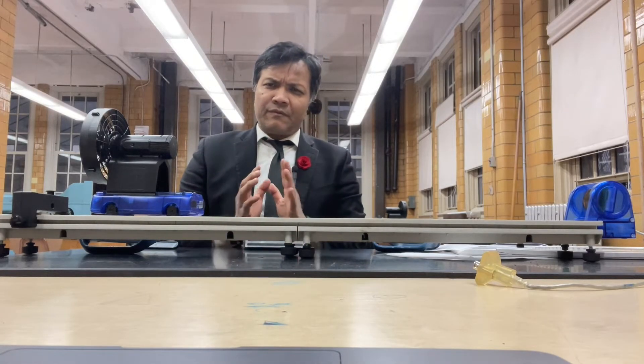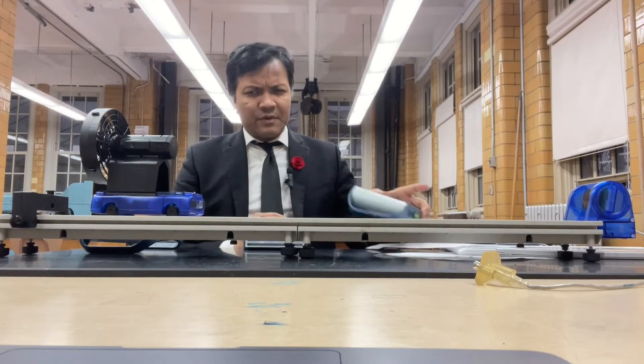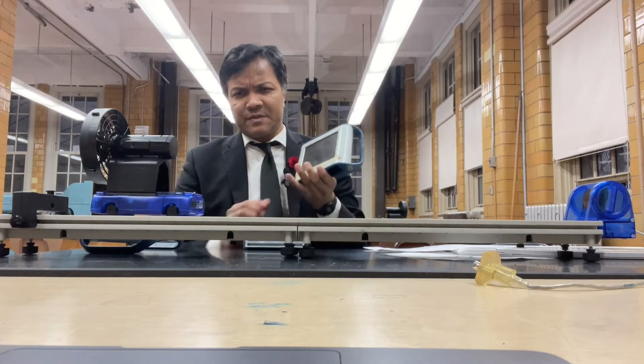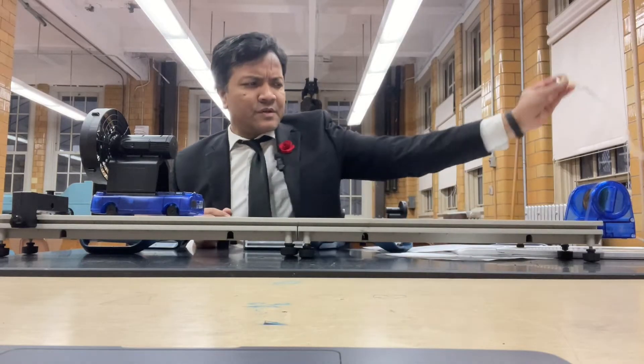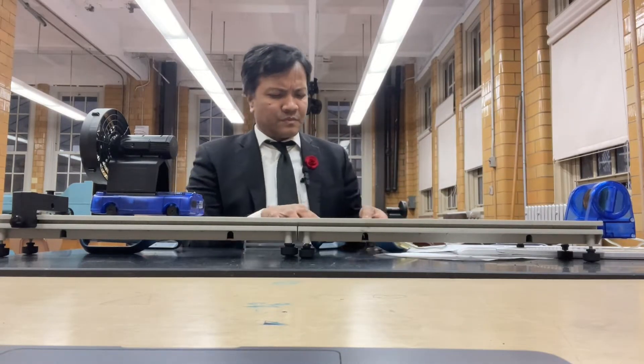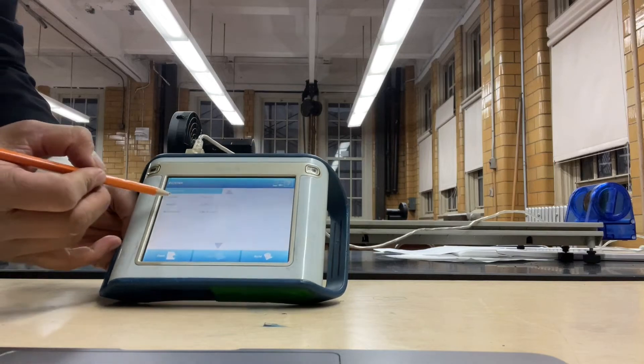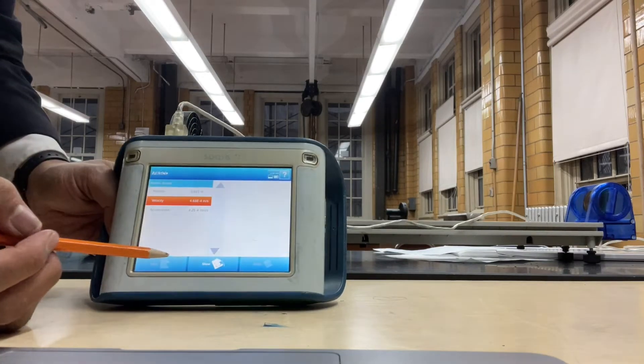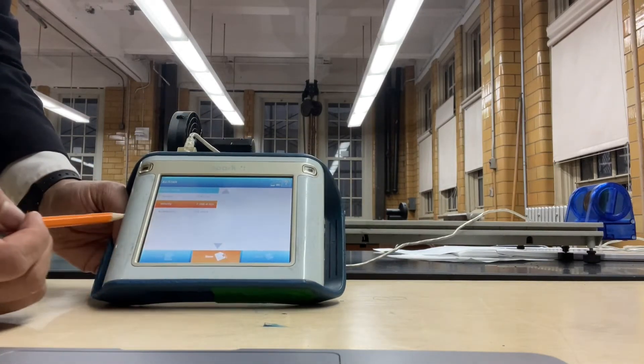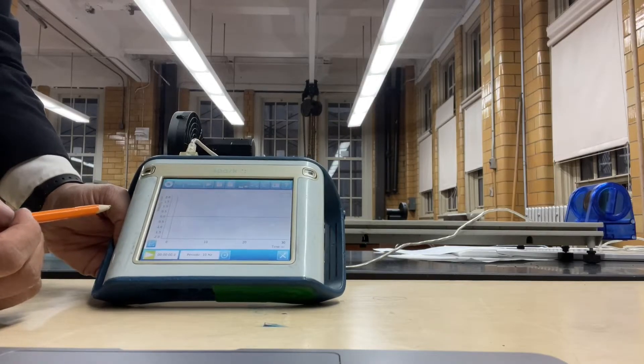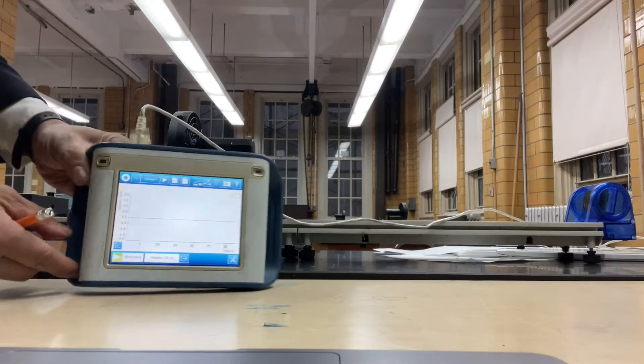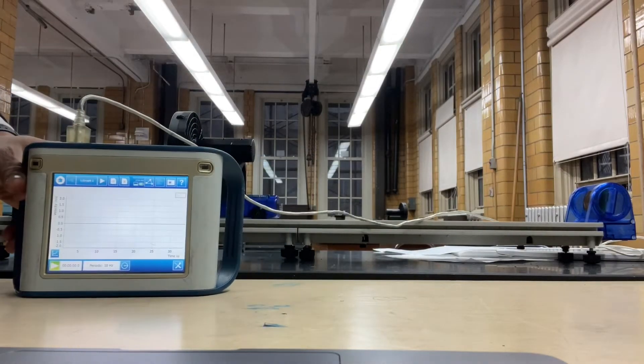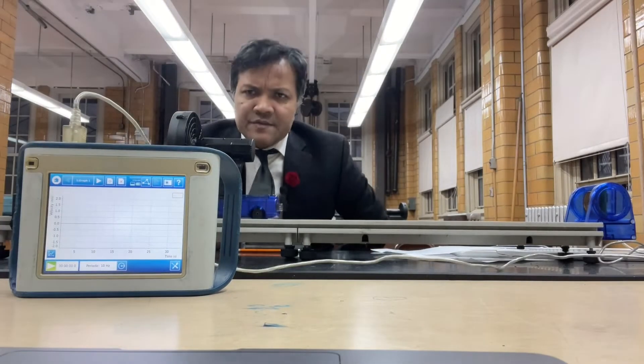How are we going to find the acceleration? We're going to find the acceleration from Spark View. First thing we're going to do, we're going to turn on the Spark View. Velocity, and then show. And then this is the velocity versus time graph. We're going to put it over here, velocity versus time graph.